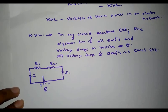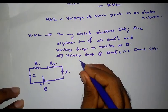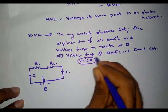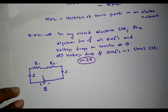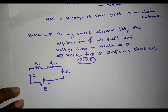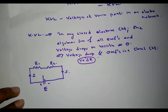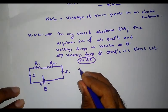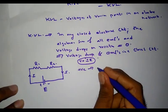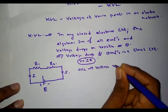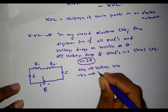Let us analyze the drops in R1 and R2. From Ohm's law, the voltage drop V is equal to I times R. Now, we have to determine the signs for the drops. We follow the convention that a positive sign is assigned to a voltage rise, whereas a negative sign is assigned to a voltage drop.